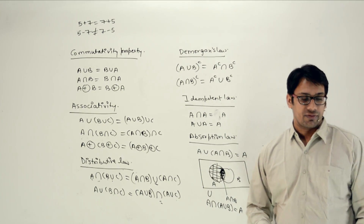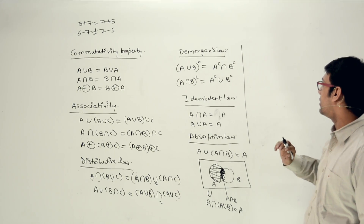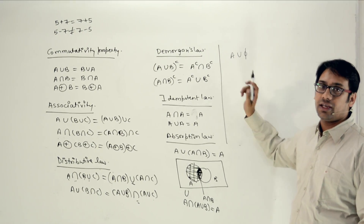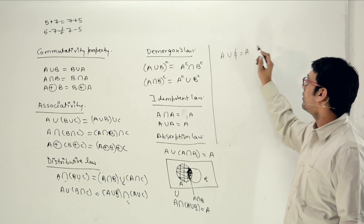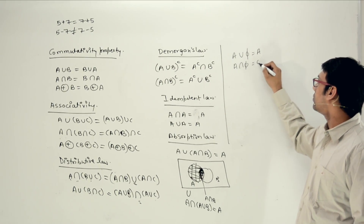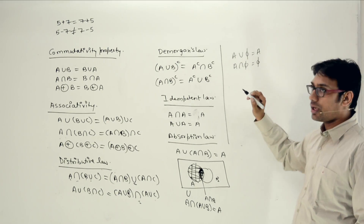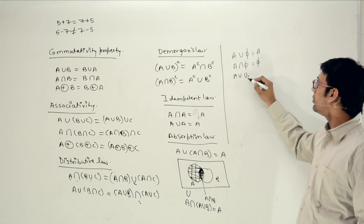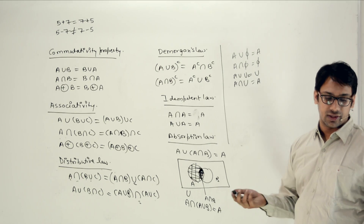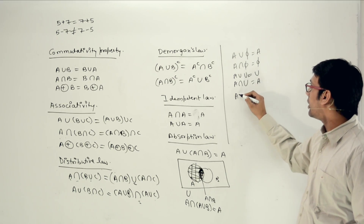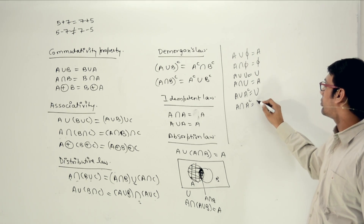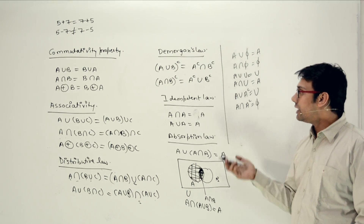We can also have other laws. For example: A union phi (null set) equals A; A intersection phi equals phi. A union the universal set equals the universal set; A intersection the universal set equals A. Furthermore, A union A complement equals the universal set, and A intersection A complement equals phi, because they have nothing in common. These are very basic properties.